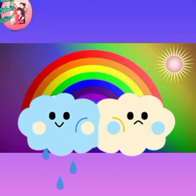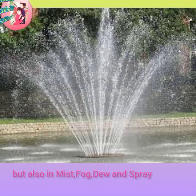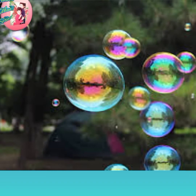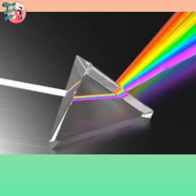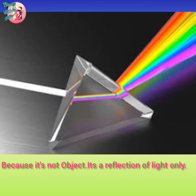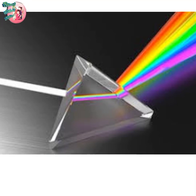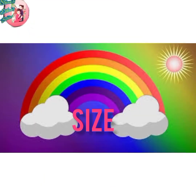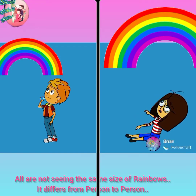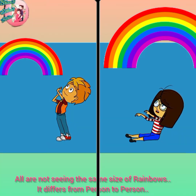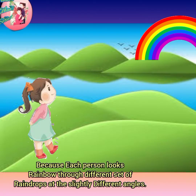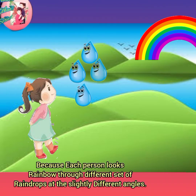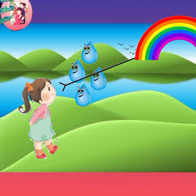A rainbow can be seen not just in rain, but also in mist, fog, dew, and water spray. Rainbow colors can even appear in bubbles! If you want to touch a rainbow, you can't — it's not an object, it's a reflection of light, just like a mirror image. All people are not seeing the same size of rainbow; it differs from person to person, because each person looks at the rainbow through different sets of raindrops at different angles.